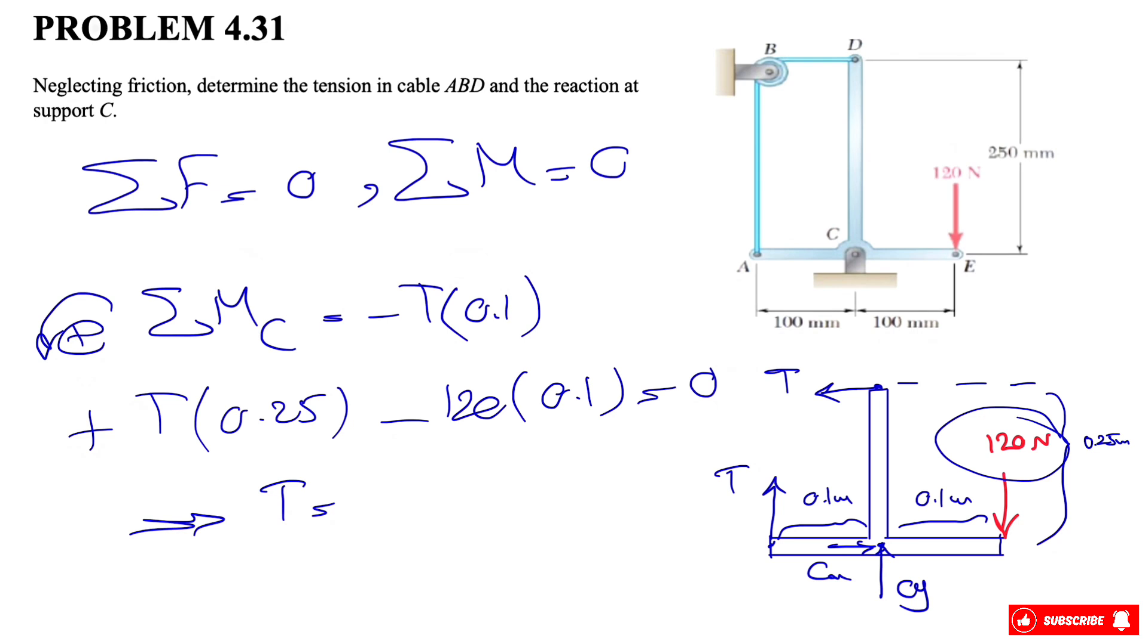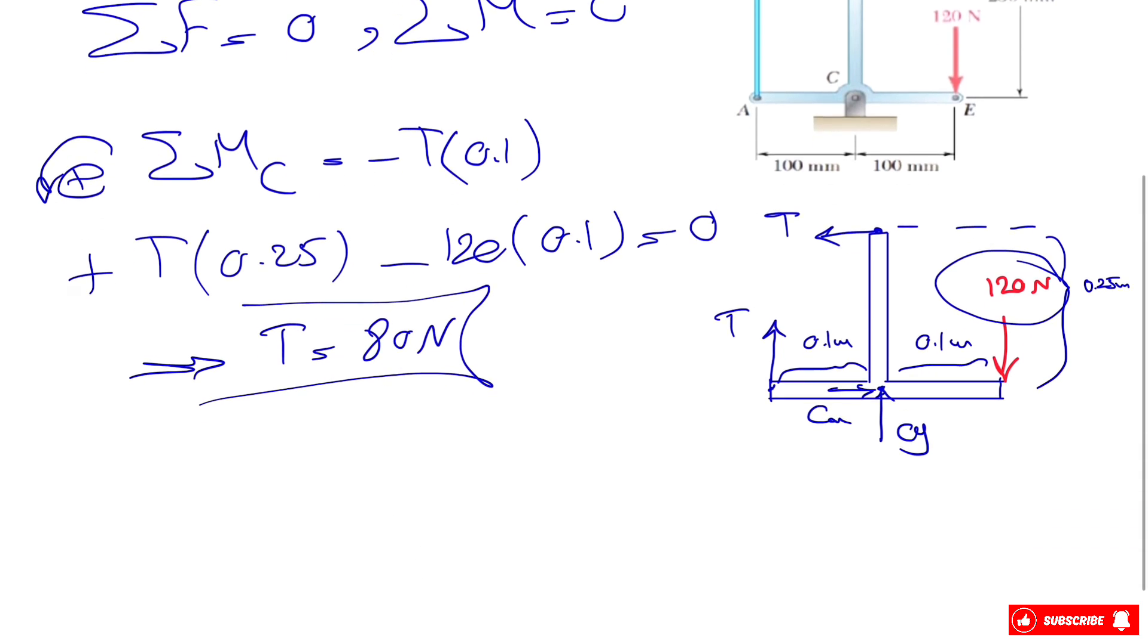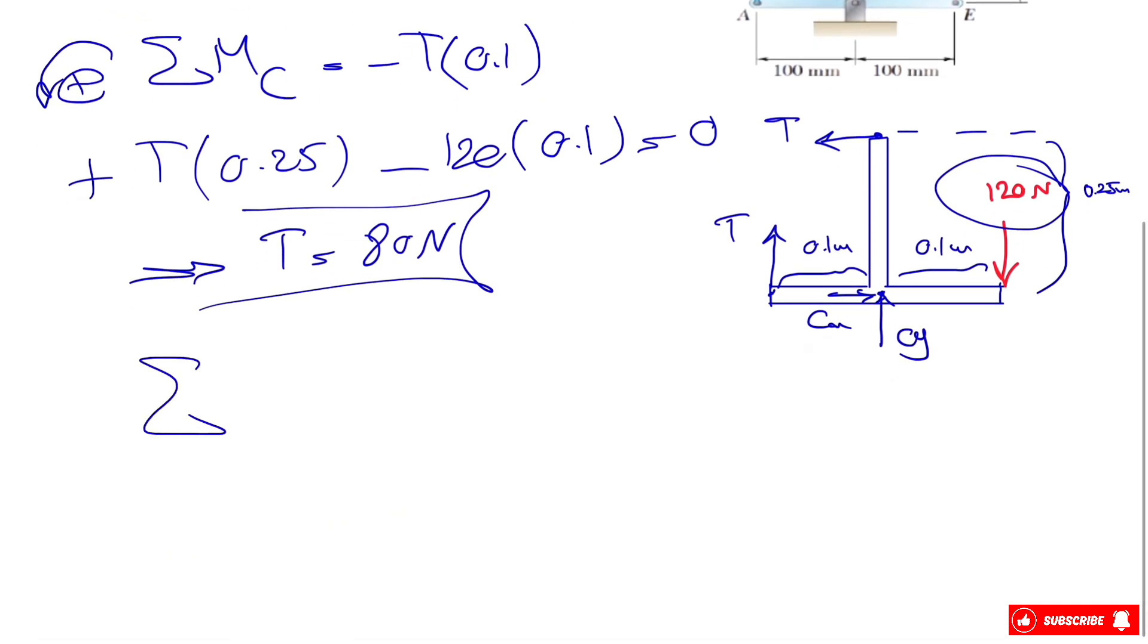Now we can use Fy and Fx to find Cx and Cy. For Fx, we have Cx minus T equals zero, which means Cx is 80 newtons. No negative sign shows that the direction we assumed was correct.